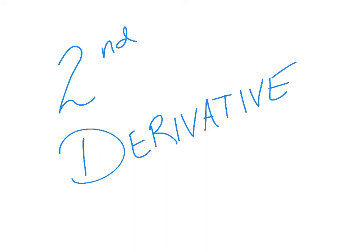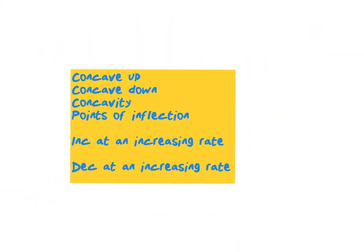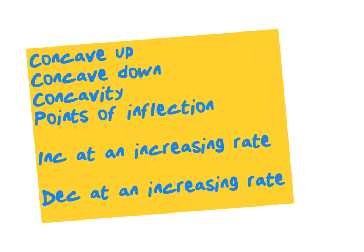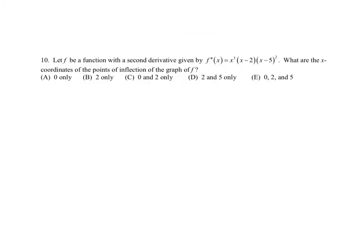Alright, so in our last video we focused on the first derivative and today we're going to focus on, you guessed it, the second derivative. So what should trigger in your brain to use the second derivative? Well, of course, I've got a nice outline here. Here are some key words: concave up, concave down, concavity, points of inflection, and then phrases like increasing at an increasing rate or decreasing at an increasing rate. So again here, I just took some random exam questions that use the second derivative that I thought we should focus on.